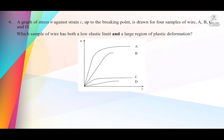Question number 4: a graph of stress against strain up to breaking point is drawn for 4 samples A, B, C, D. Which sample of wire has both a low elastic limit and large plastic deformation? Low elastic limit means the stress value should be less. Large plastic deformation means the material should extend more to the strain side.